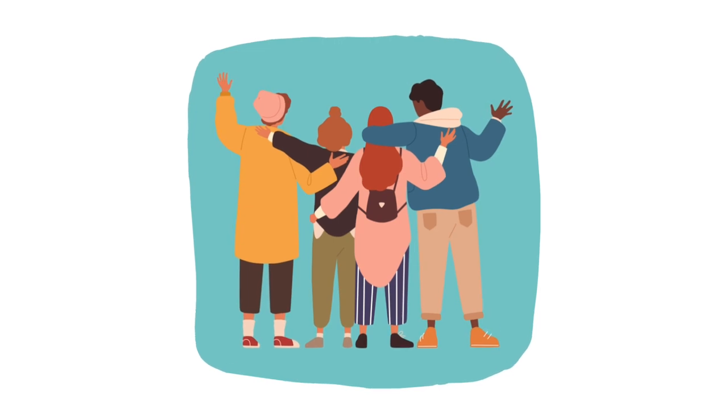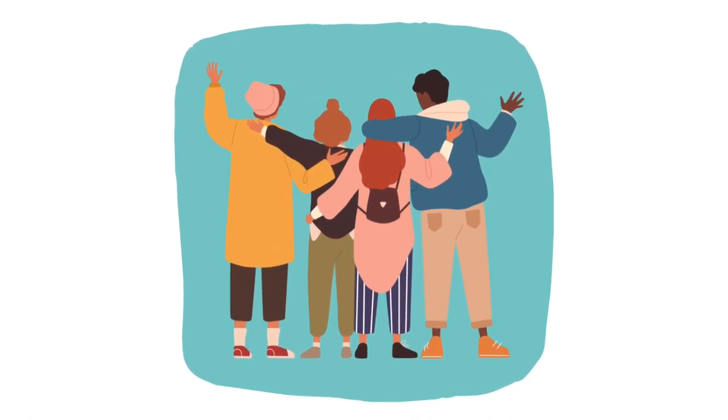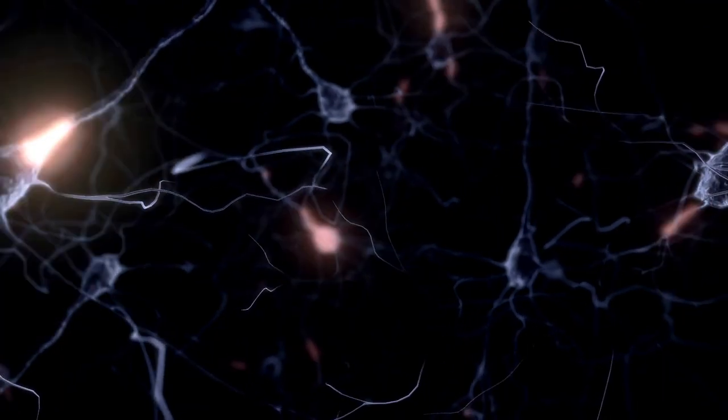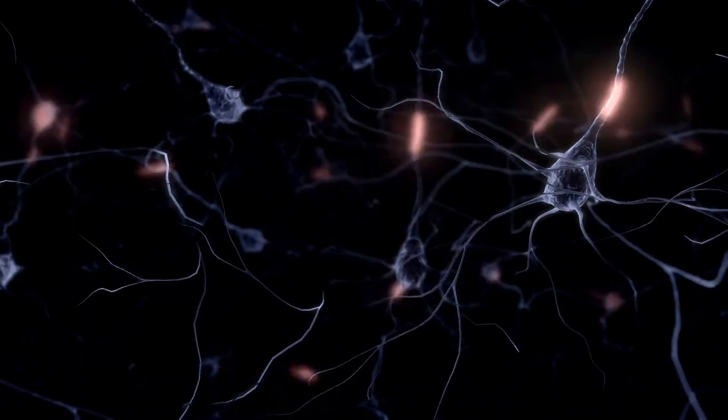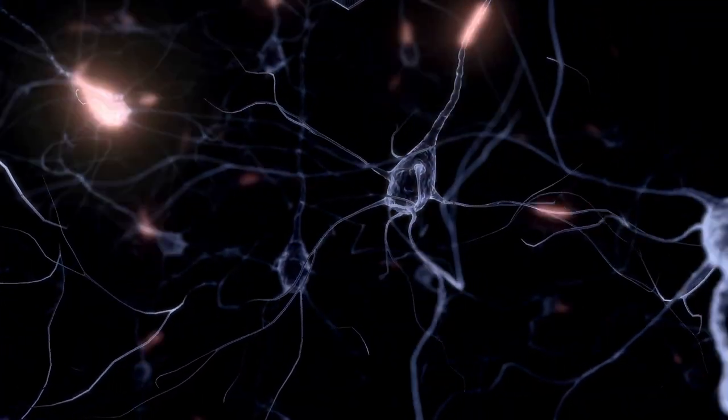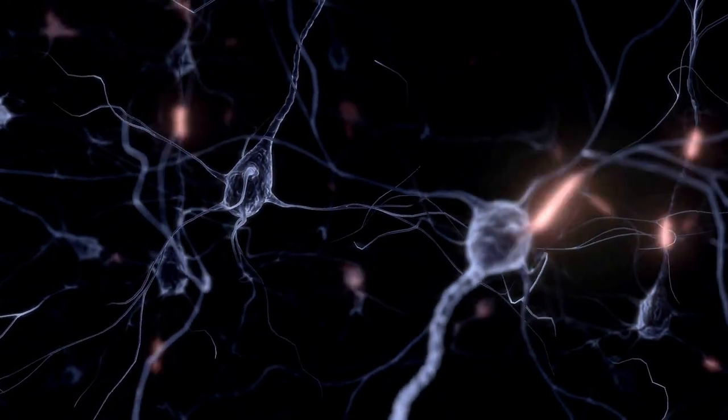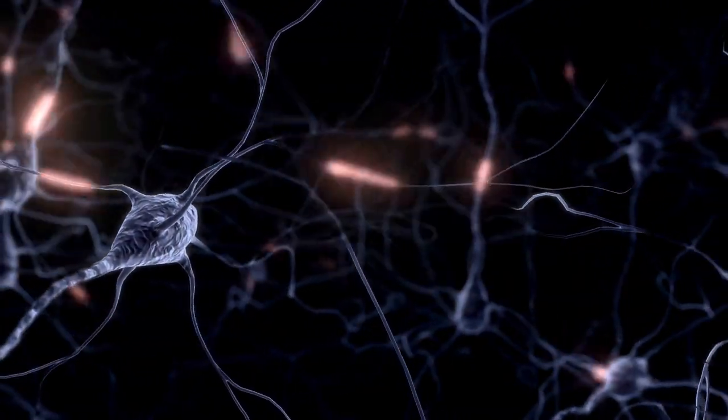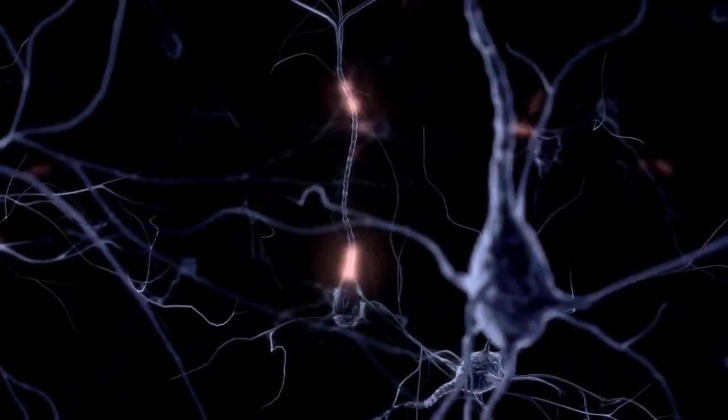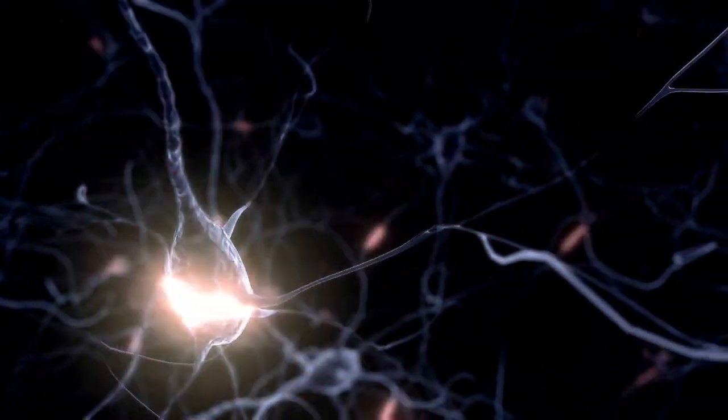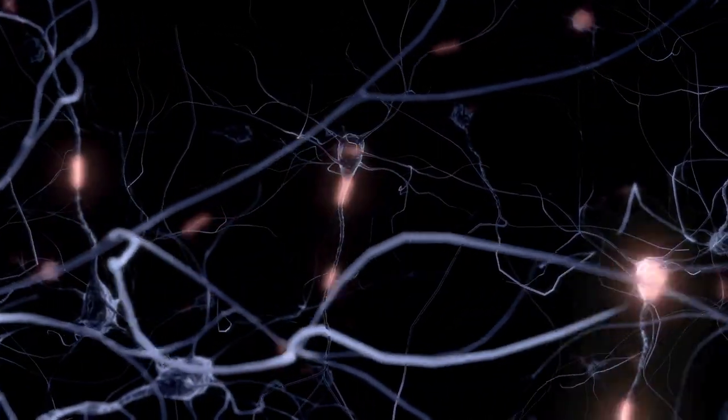During your teenage years, multiple things are happening in your brain. It is producing new neurons at a much faster rate than it was when you were young. There are millions of connections forming between all the billions of neurons, once again at a rate much faster than it was when you were young.